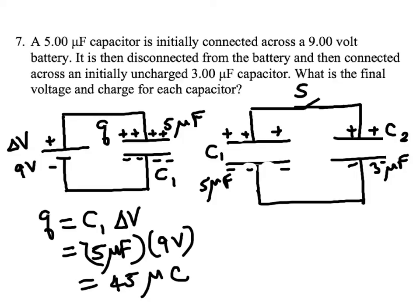So there is a new charge Q1 prime. I'll call it Q1 prime on C1, and the charge on C2 is Q2 prime. And the redistribution of the charge will stop when the potential difference across either capacitor is the same.